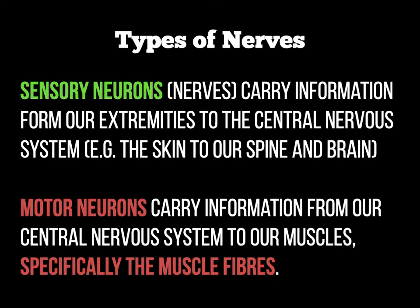Motor neurons carry information from the CNS — the central nervous system — to our muscles and back again. We're particularly interested in the messages they carry to the muscle fibres to help them contract.